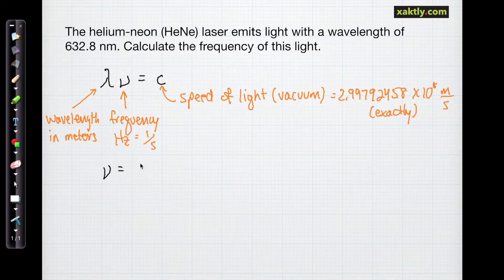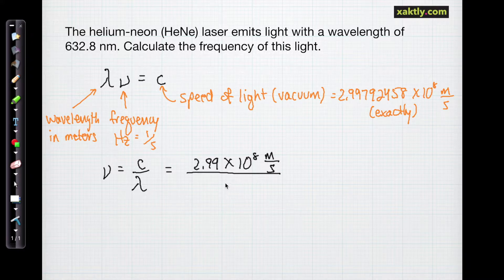Now we want to solve for frequency so we can divide both sides by lambda to get nu equals c over lambda. And then we just plug in. We'll just use 2.99 times 10 to the eighth meters per second for the speed of light. Divide that by the wavelength. That's 632.8 and it's going to be times 10 to the minus ninth meters because remember nano in the metric system means times 10 to the minus ninth or a billionth.